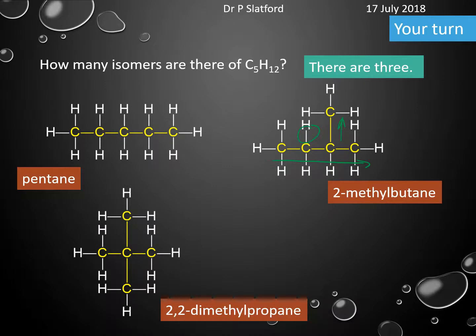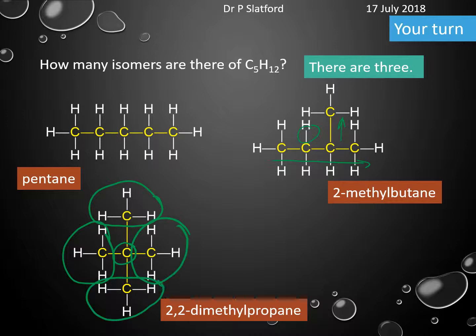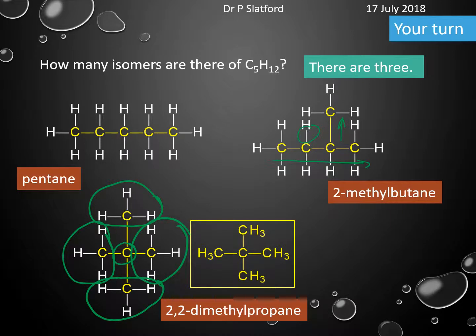And then we have 2,2-dimethylpropane, where we have one central carbon with a CH3 group here, a CH3 group here, a CH3 group here, and a CH3 group here. Sometimes you might see this drawn slightly simpler. So structural isomers are molecules that have the same molecular formula but a different structural formula.